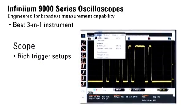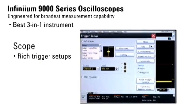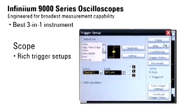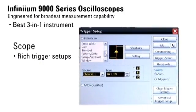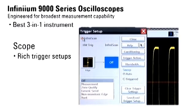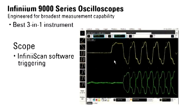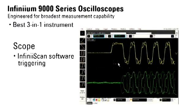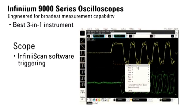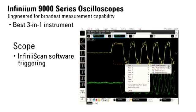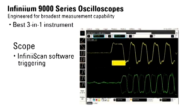A rich set of configurable trigger setups allows you to quickly zero in on the signals of interest. In addition to built-in hardware-based triggering, Infiniscan software triggering enables sophistication impossible for traditional scopes, like this quick zone qualified trigger to separate DDR read and write cycles.